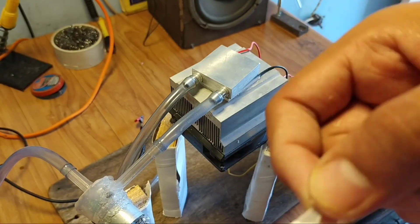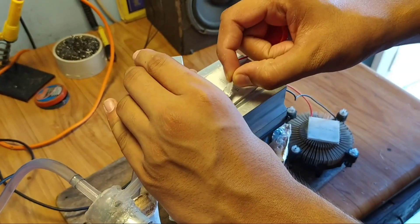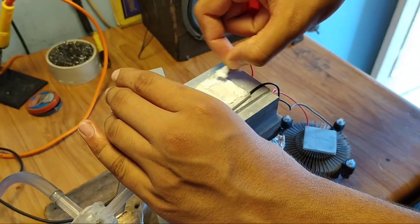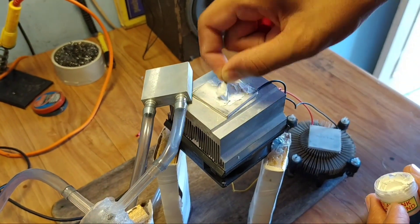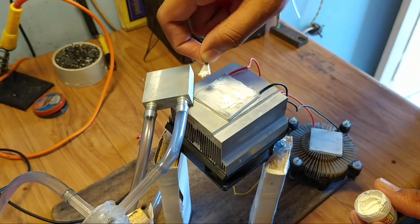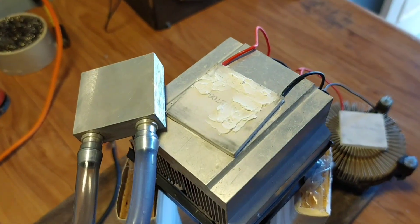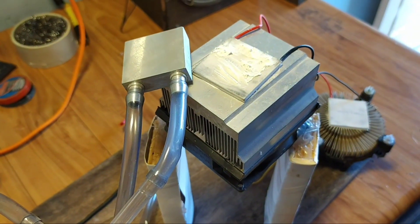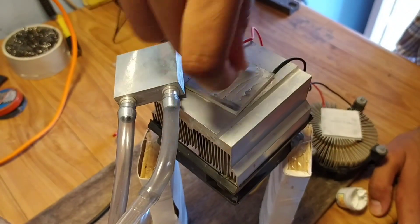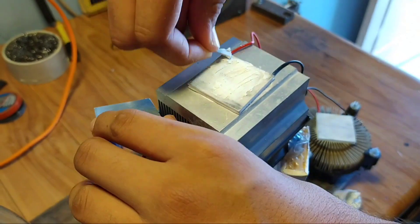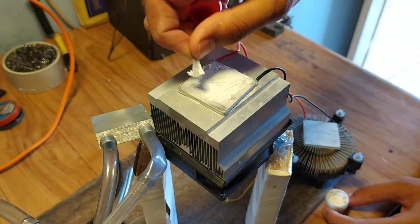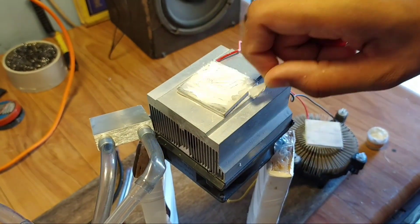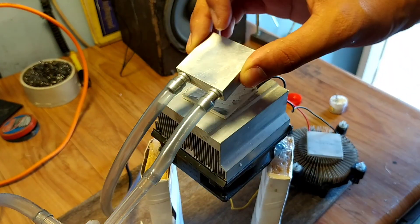First we need to place water block on Peltier module with heat sink compound so thermal conductivity will be good. I will recommend to use high quality heat sink compound. Spread thermal paste evenly so the contact will be good. Now put water block on it.